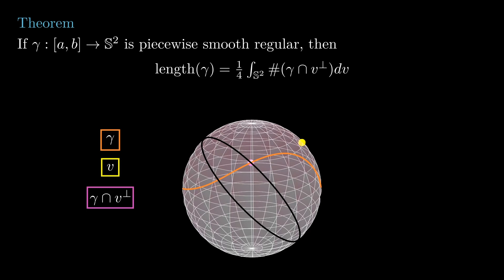To begin the proof, I leave it to you to verify that the formula holds if gamma is a portion of an equator. By concatenation, it will also hold for piecewise linear curves.